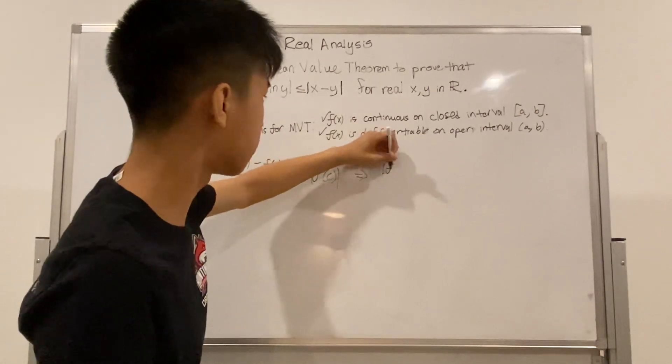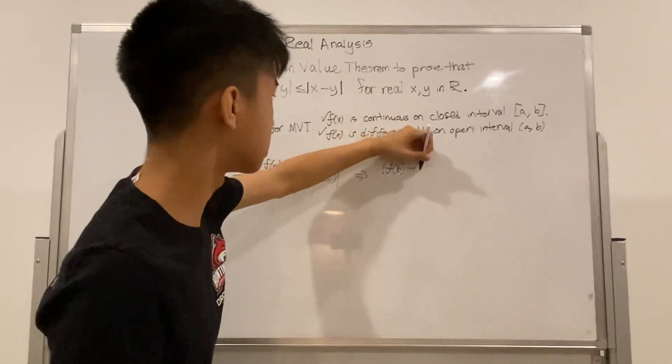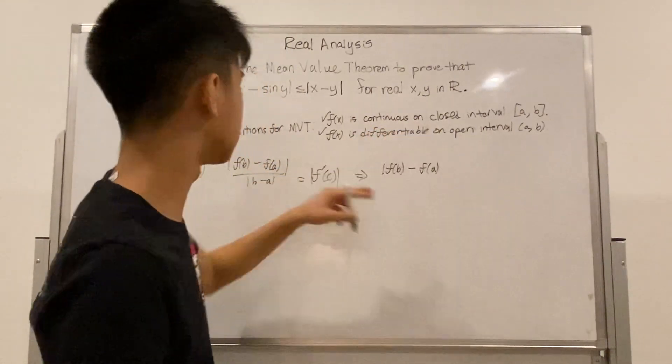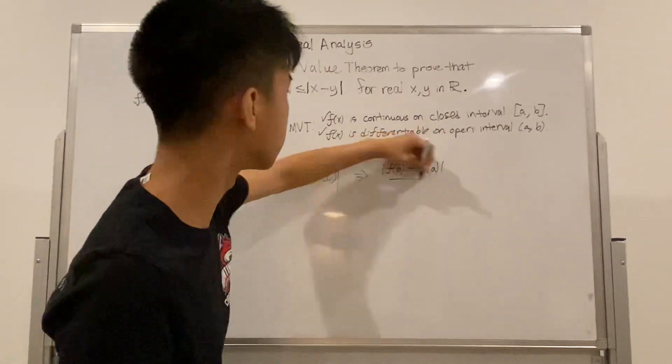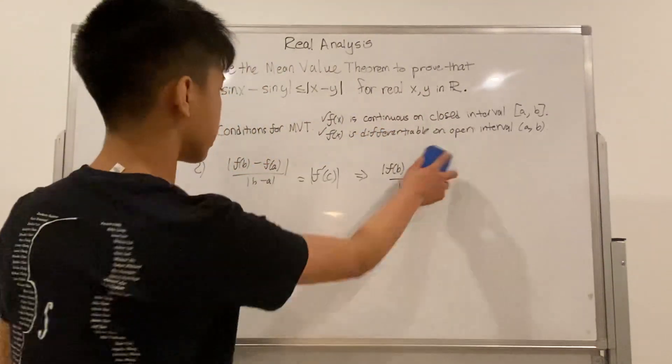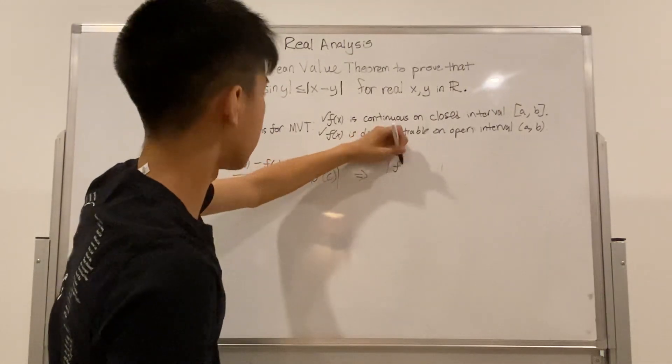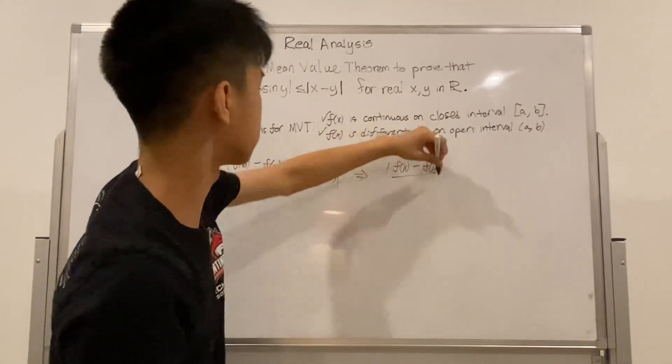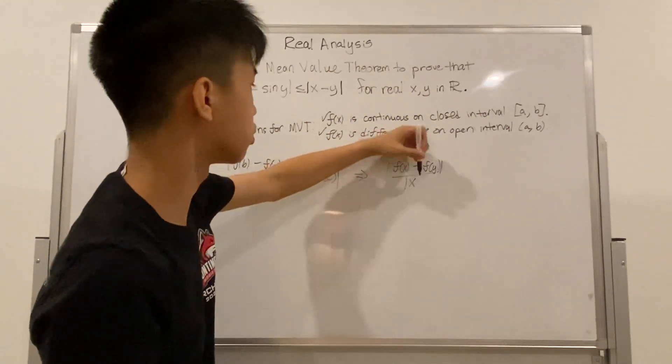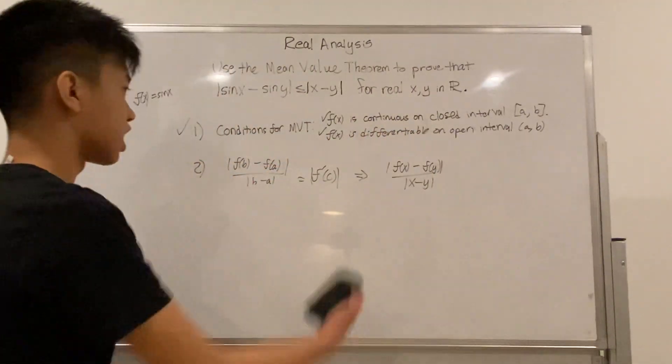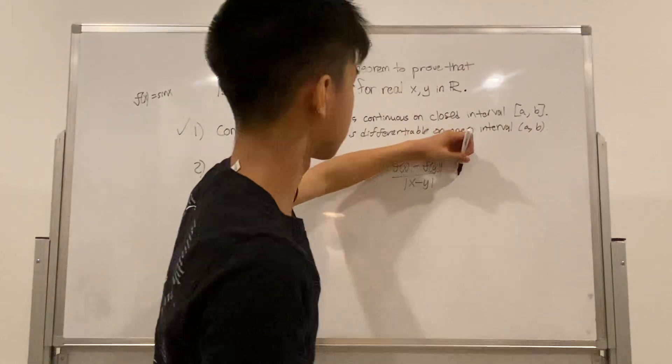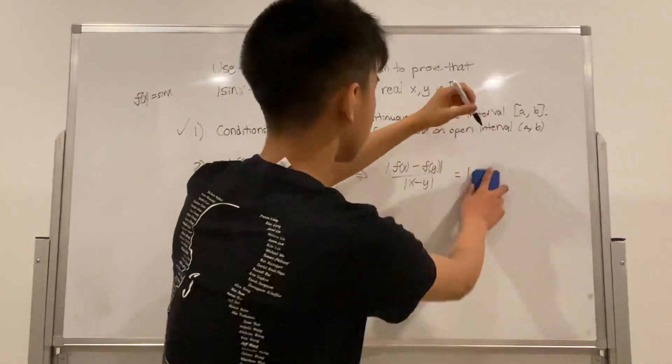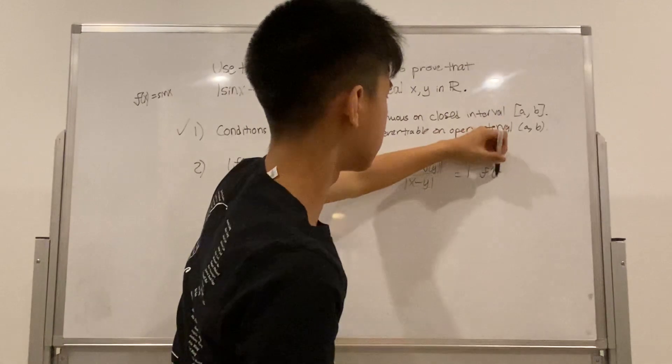So we have absolute value of f of x minus f of y over absolute value x minus y, that's equal to absolute value of f prime of c.